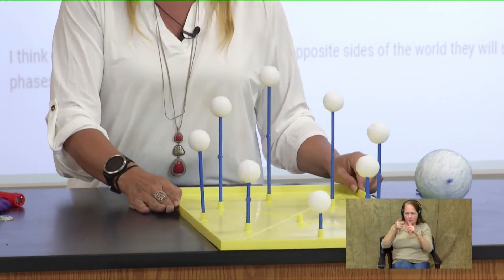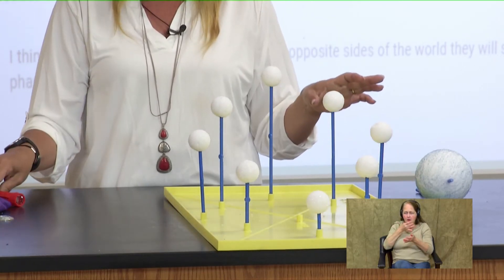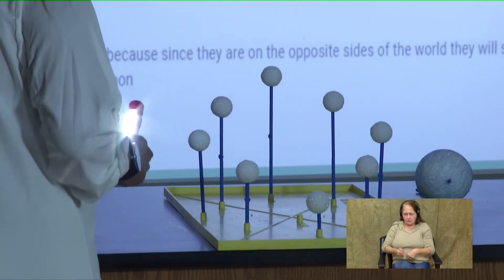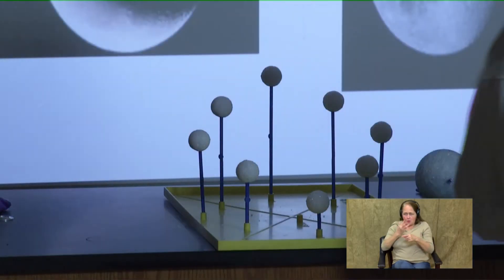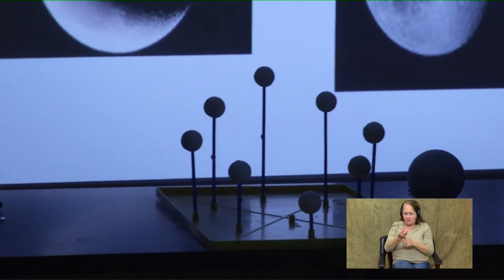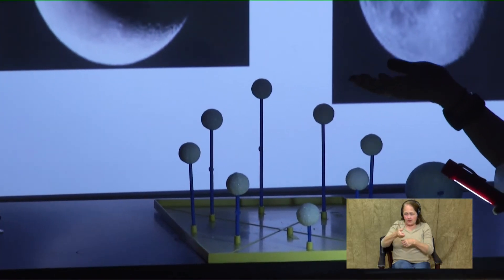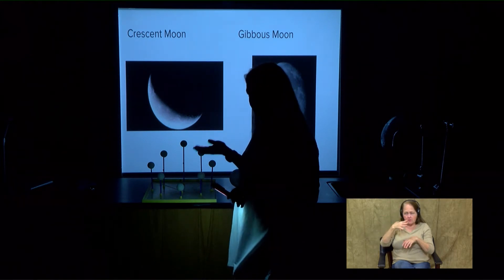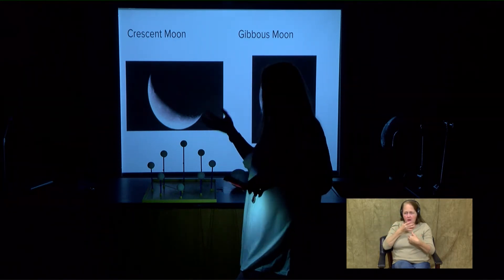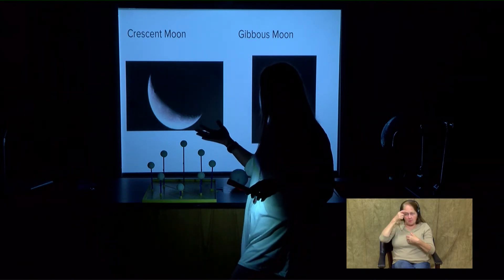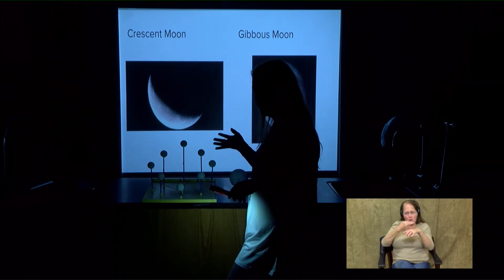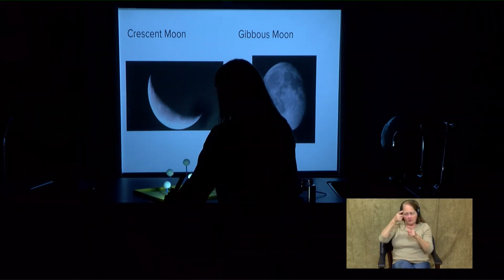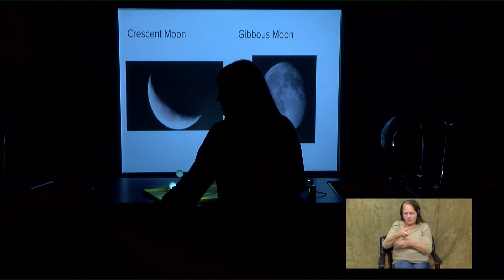First thing we're going to look at is: where does the light from the moon come from? So let's go ahead and kill the lights and see what we can see. In this model, my flashlight is representing the sun, because that's where all of the light comes from. The moon does not create its own light — it's only a big hunk of space rock that's orbiting Earth, so it does not produce light any more than Earth produces light. It only reflects light from the sun.